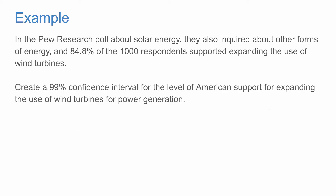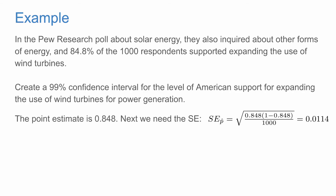Here we'll create a 99% confidence interval for the proportion of American support for expanding the use of wind turbines for power generation. The point estimate is 0.848, and next we need the standard error. We use the plug-in principle to compute this standard error by putting in the sample proportion in place of the population proportion in the formula. We get a value of 0.0114.